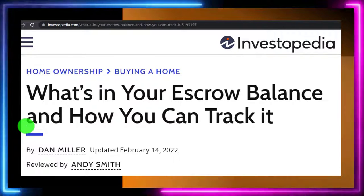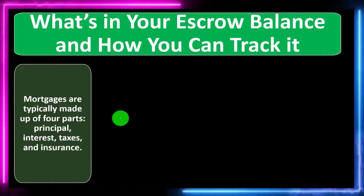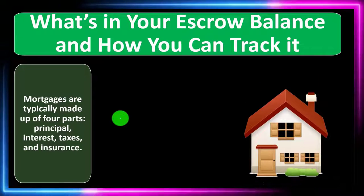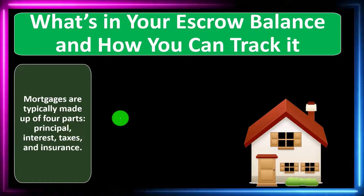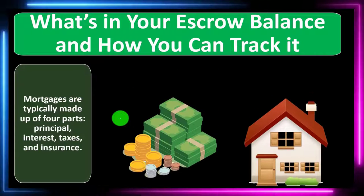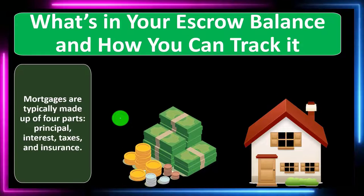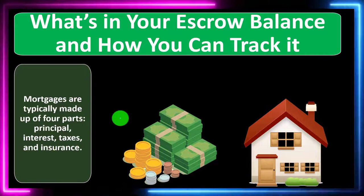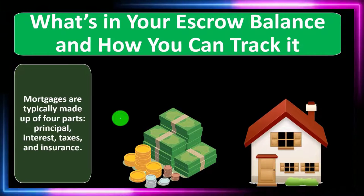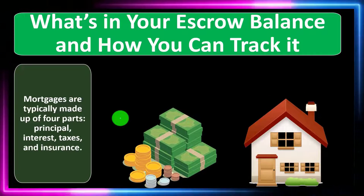Mortgages are typically made up of four parts: principal, interest, taxes, and insurance. When purchasing a home we typically can't just put cash down up front, so we need financing and pick up a loan. When paying off the loan, we'll be paying the principal and the interest. It's important to break out the principal and interest, which we'll show in more depth when we get into practice problems making amortization tables.